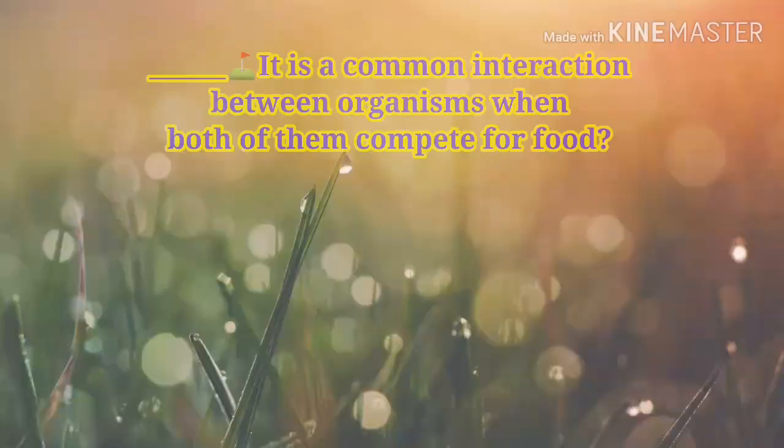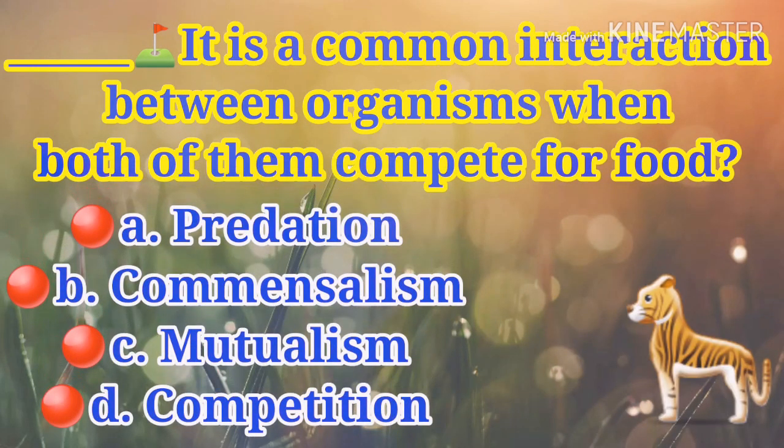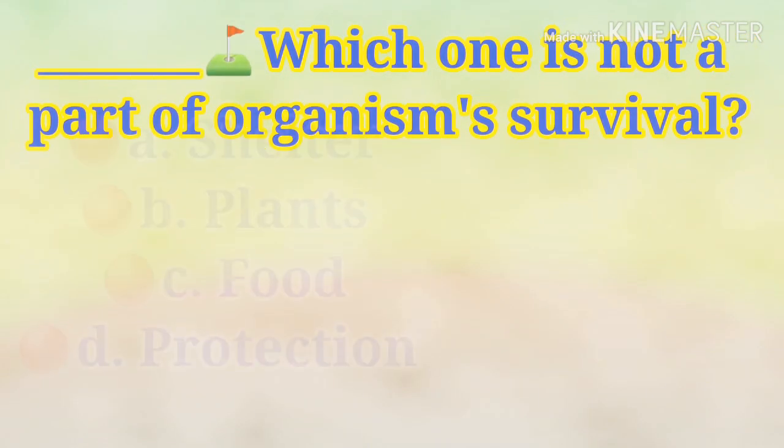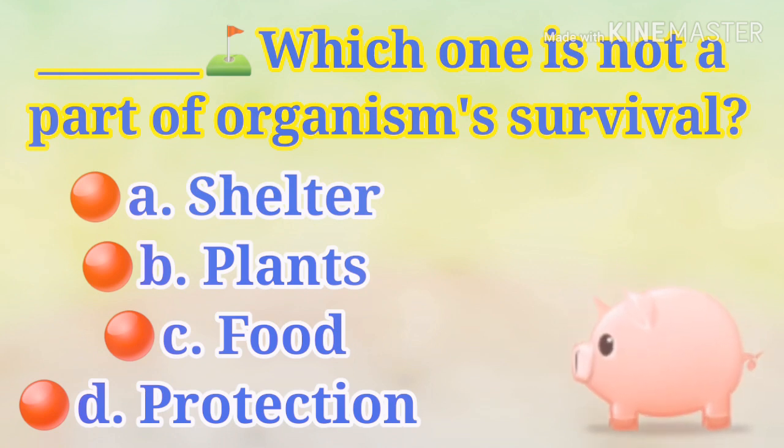Natural ecosystems are mostly complex. Many populations live together in the same habitat, which is why competition arises — they compete for food in order to survive. Different populations are interdependent on one another, meaning there is interaction between organisms and with non-living components for survival. The common cause of interaction is the need for food, shelter, and protection.